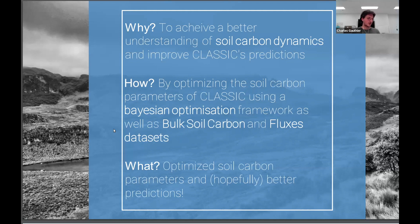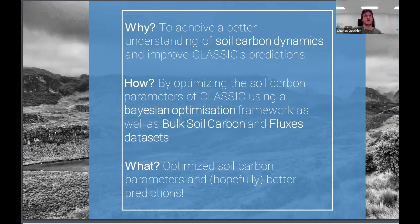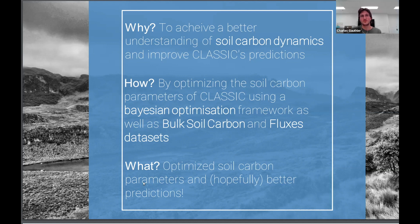To recap: why are we looking into soil carbon? Our goal is to achieve a better understanding of soil carbon dynamics and improve the model's predictions. How are we doing it? We're optimizing parameters using a Bayesian optimization framework as well as different datasets. What we get out of it is optimized soil carbon parameters and hopefully better predictions. But as you can see, there are still a lot of interesting things and challenges happening, and we're still trying to make sense of all of this.